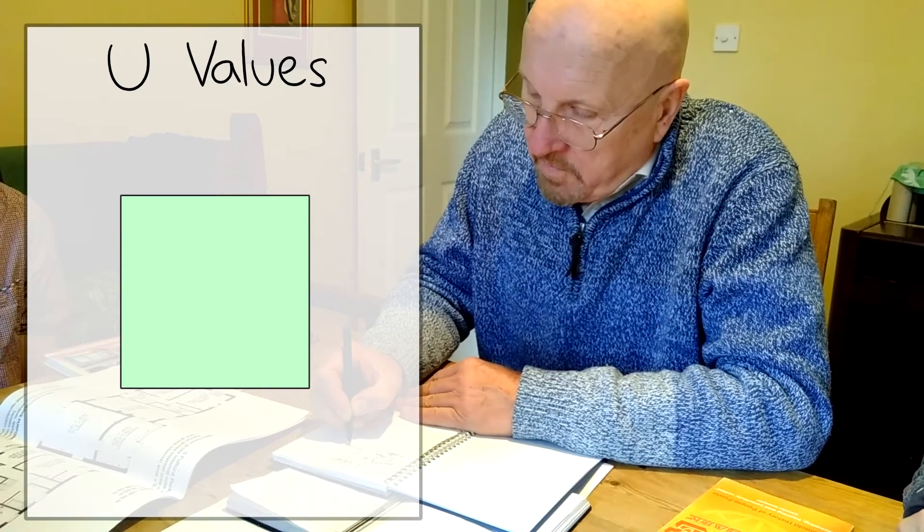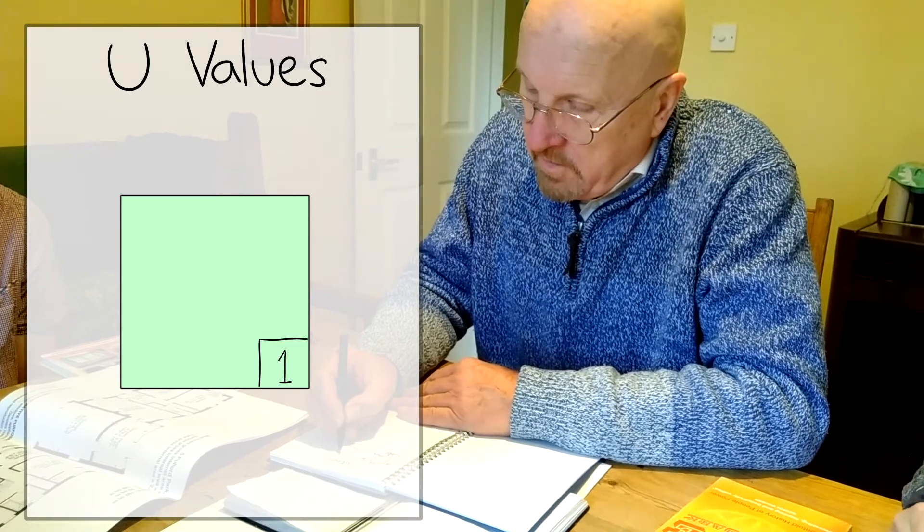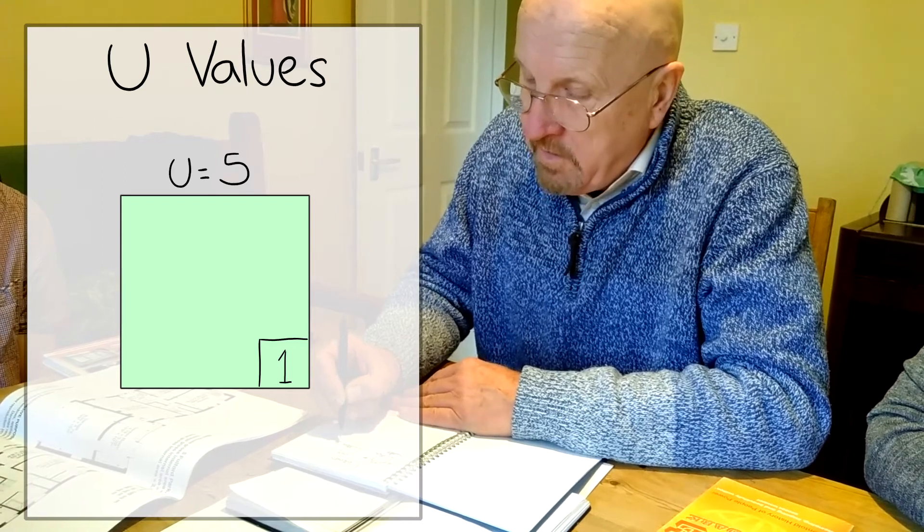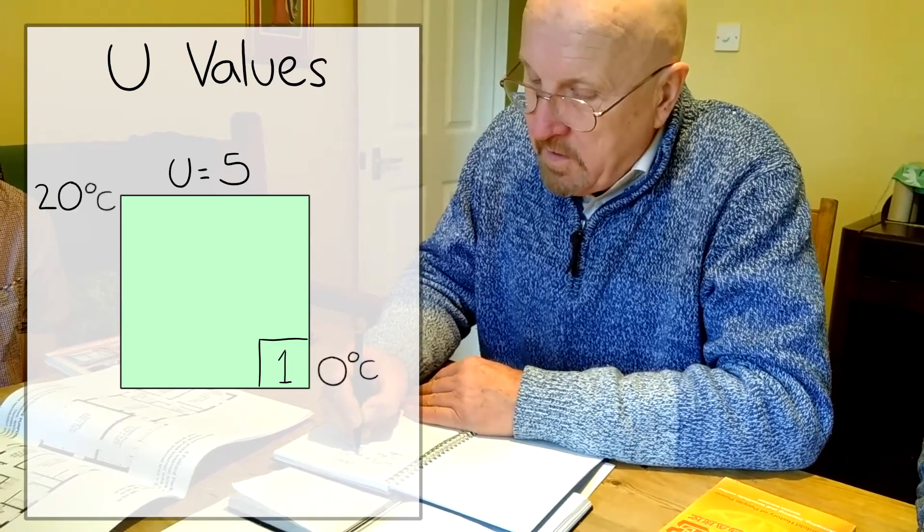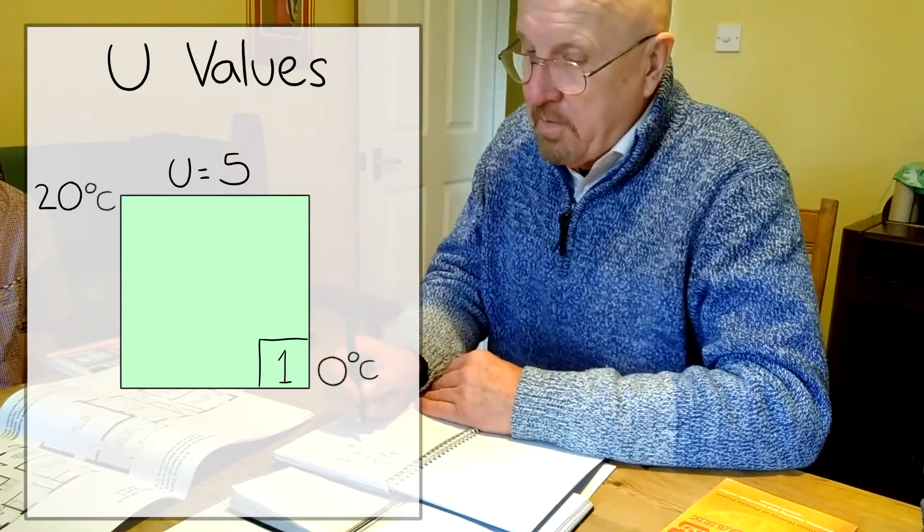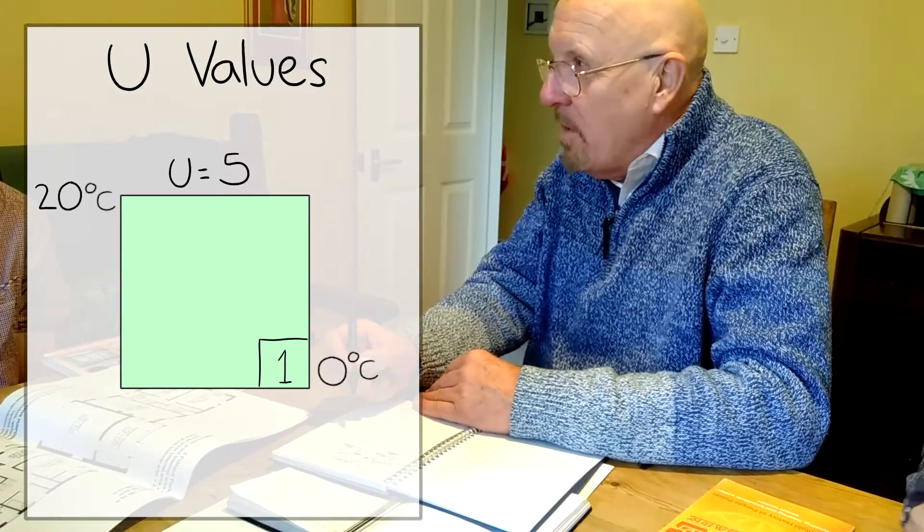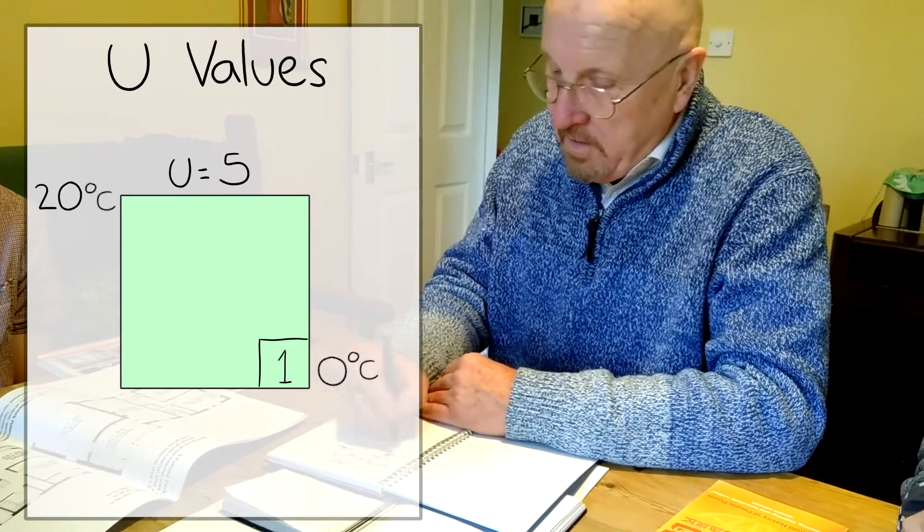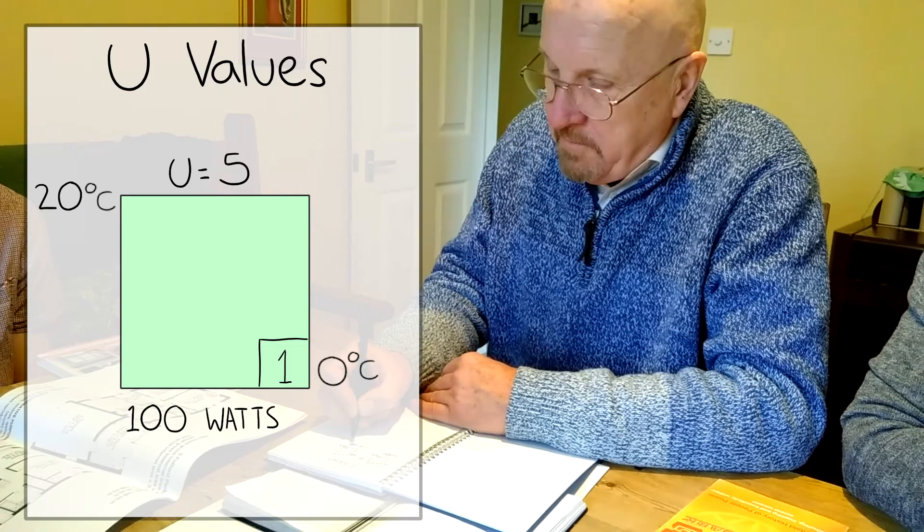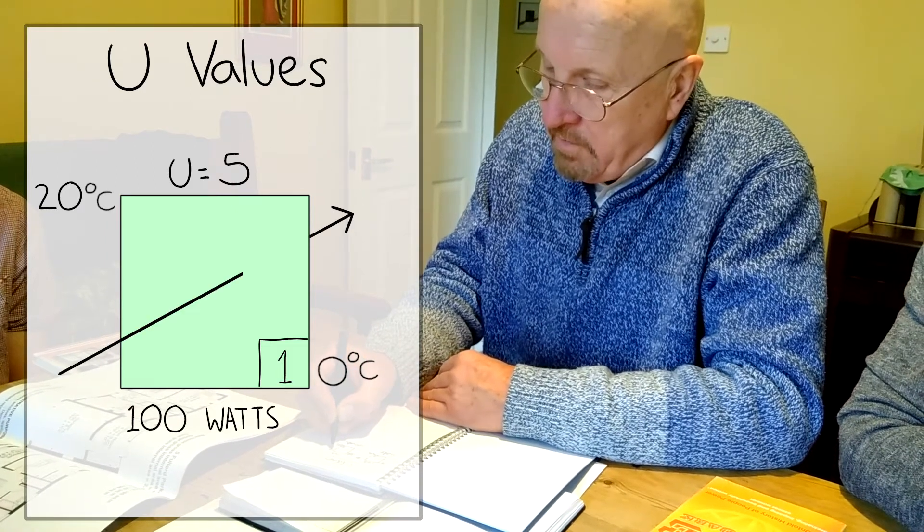Let's take the same square meter of wall. It's the same materials. One square meter is still 0 degrees C but let's have it 20 degrees C inside now which will suit you, Jesper, but not necessarily other members of your family. This is a linear relationship so we're now up to 100 watts flowing permanently through that one square meter.